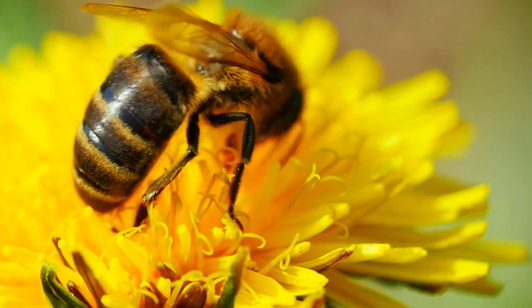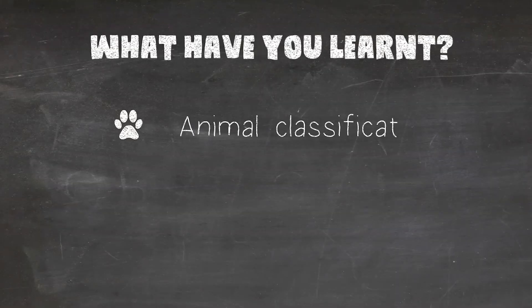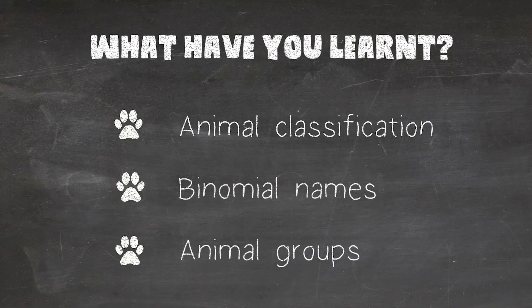So we've looked at animal classification, binomial names and animal groups. I love just how many animals there are out there that we can learn about. You can never stop learning when it comes to the life on Earth — we're still discovering new species every single day, 18,000 a year actually. We've discovered about 1.2 million species, and scientists think there's about another 8.7 million to discover.